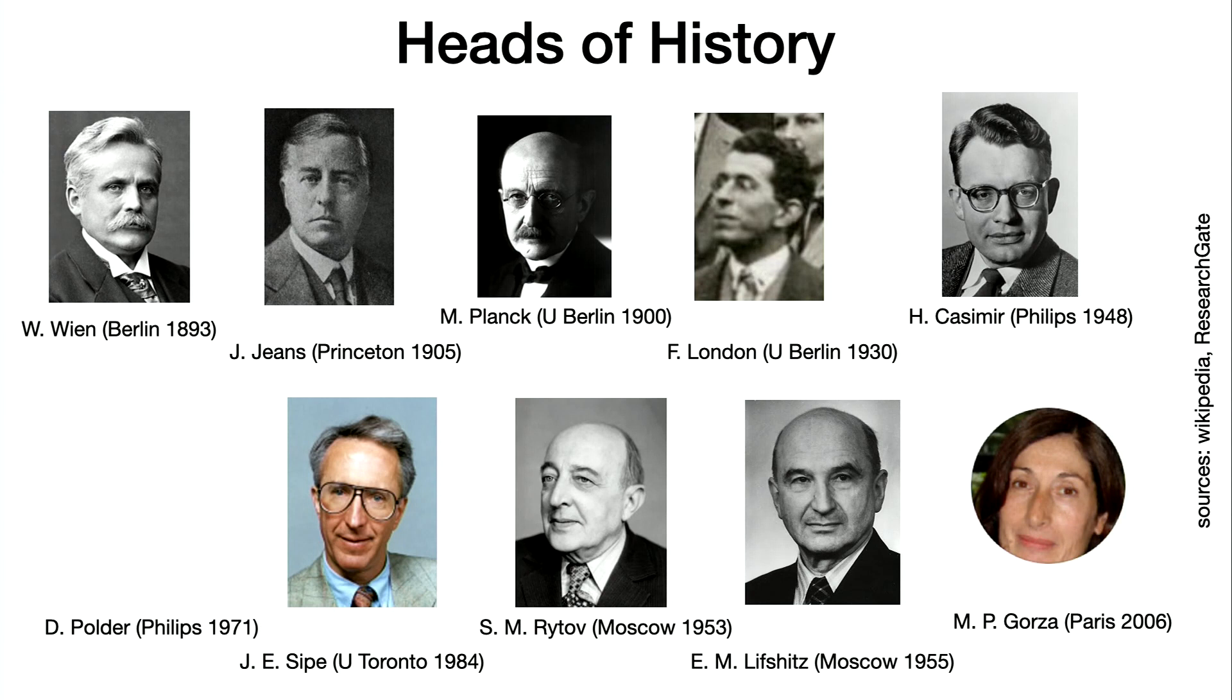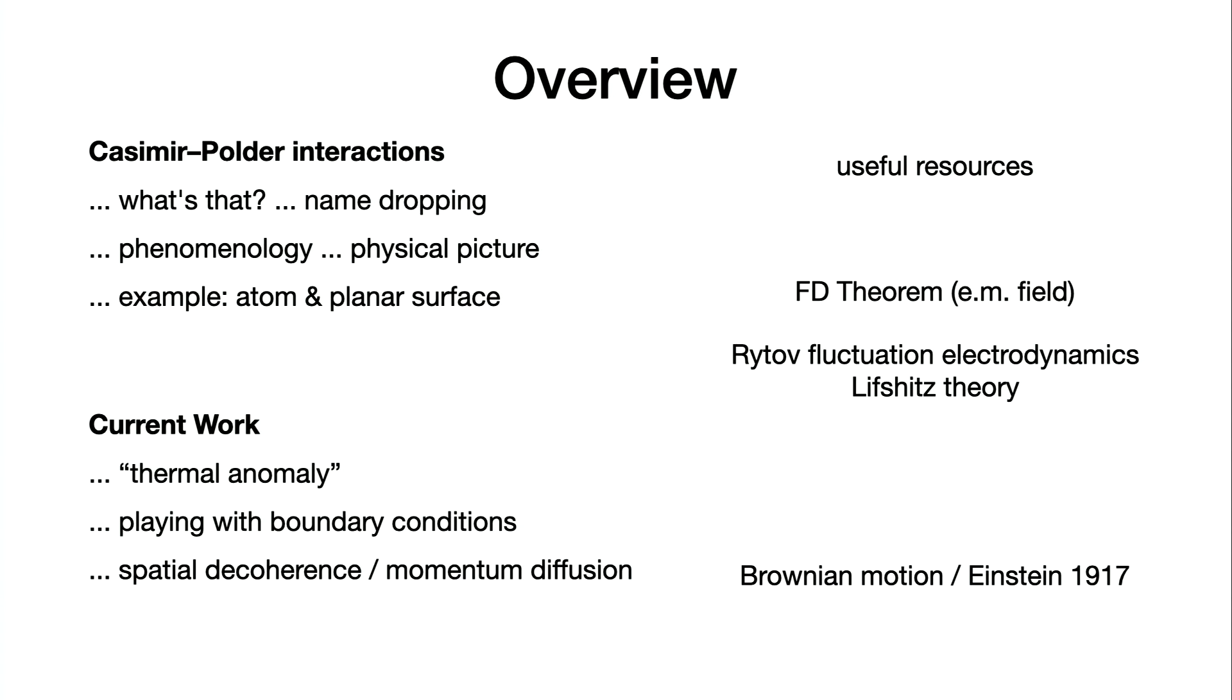The elementary processes that we are going to talk about is simply like Einstein, absorption and emission, and how temperature goes into these processes. That's roughly the overview. There will be a kind of name dropping list talking about Casimir and Polder. Then I will explain this should be a tutorial about different distance laws with power laws with exponents and so on.